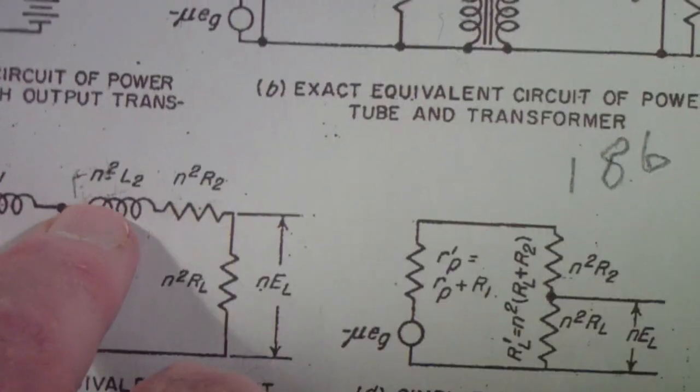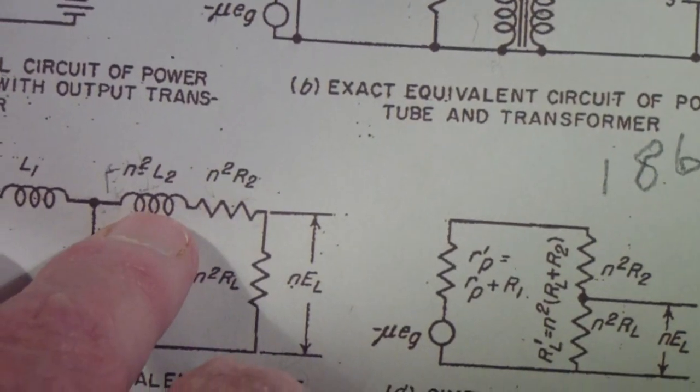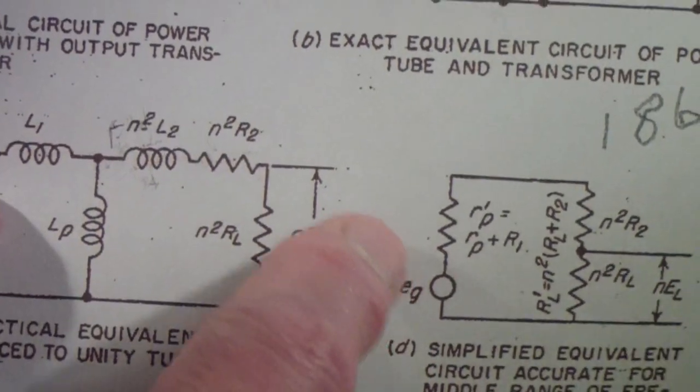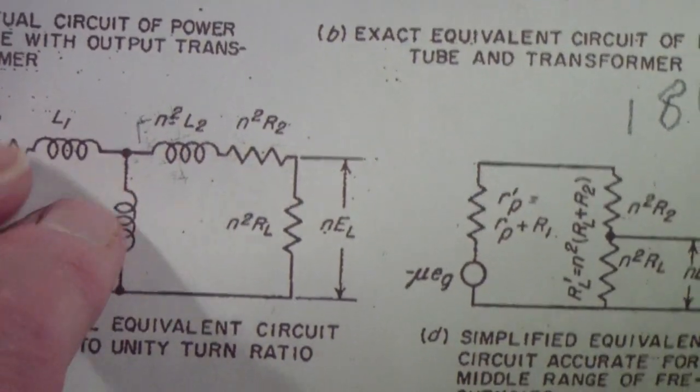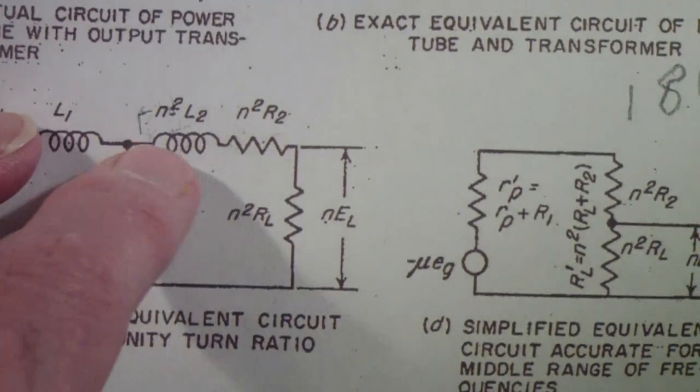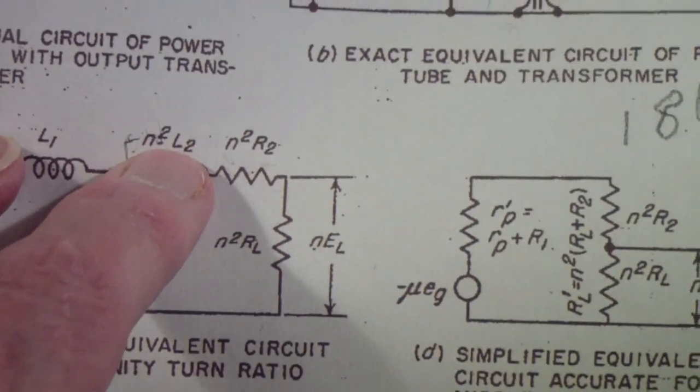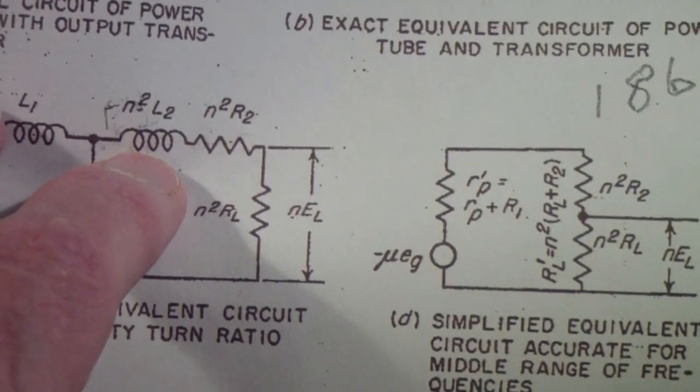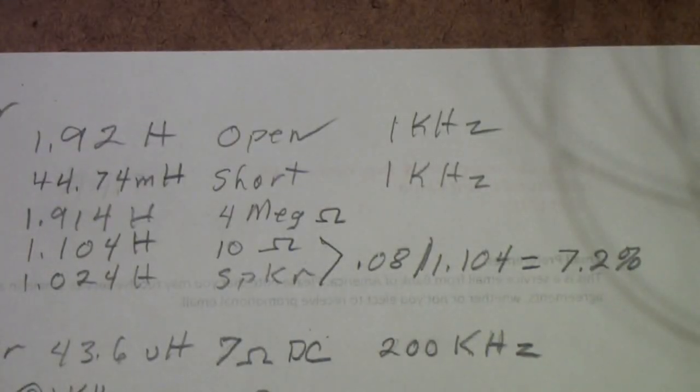The leakage inductance is approximately 44 millihenrys. And what we mean by that is actually this inductance multiplied by n squared. In other words, you'd have to divide by n squared to get the leakage inductance in the secondary. But we're only interested in what the effect is in the primary. So n squared times L2, which is the leakage inductance, is 44 millihenrys.